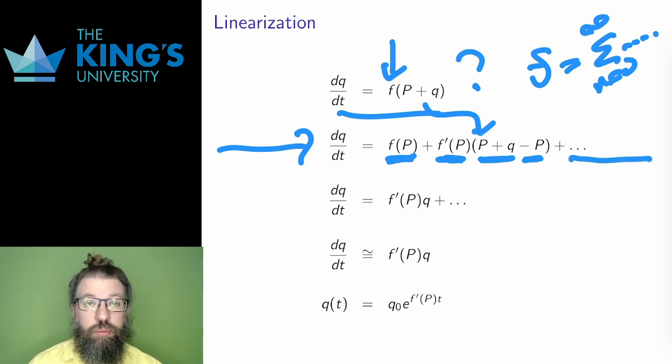Two immediate adjustments can be made. First, at the start of this, capital P was defined to be a steady state. By definition, that means f of capital P is zero. So, the first term disappears. And now, secondly, there is a P minus P in the linear term. So, those cancel off, leaving just q. Then, as before, all the higher order terms of the series are just left unwritten. After those adjustments, the series has a pretty simple start.